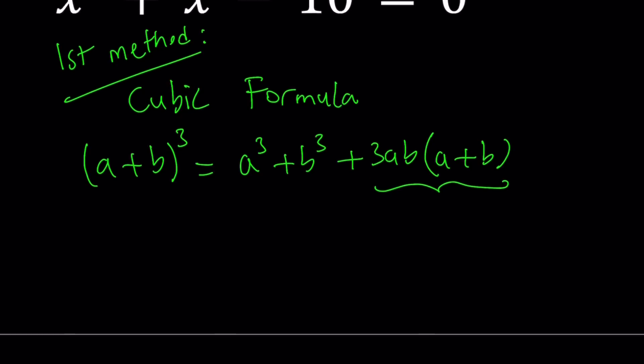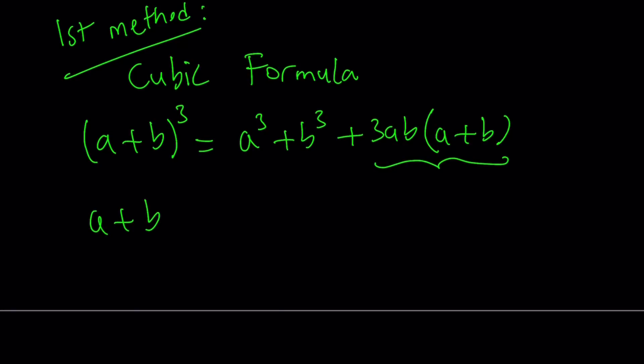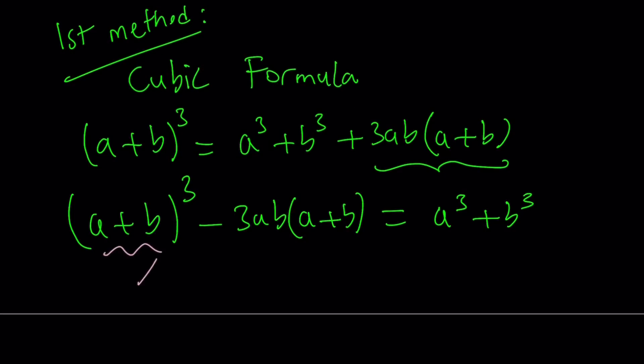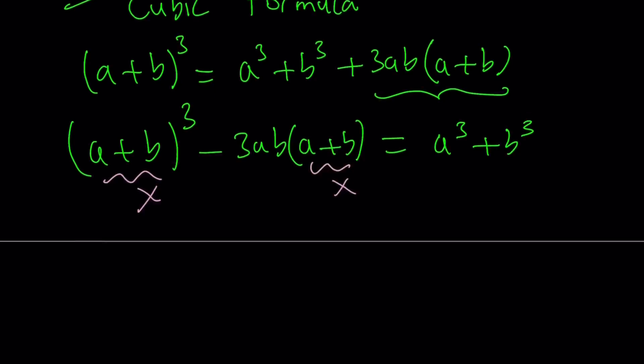And then I can go out and take this expression and subtract it from both sides. And I get the following: (a+b)³ - 3ab(a+b) = a³ + b³. And then I go ahead and call this x.